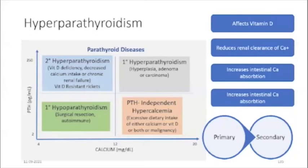Secondary hyperparathyroidism is due to vitamin D deficiency, decreased calcium intake, chronic renal failure, or technically vitamin D-resistant rickets.